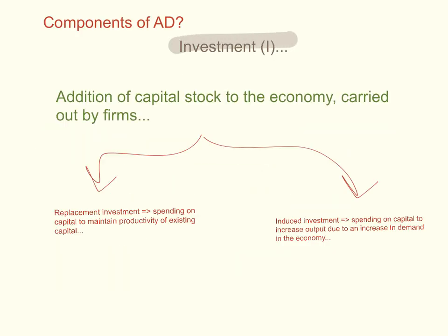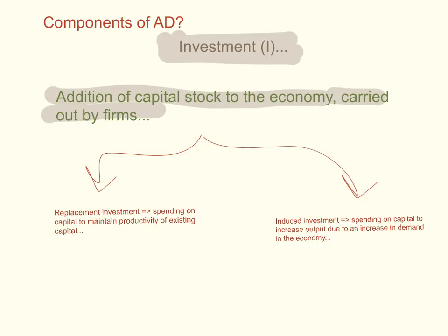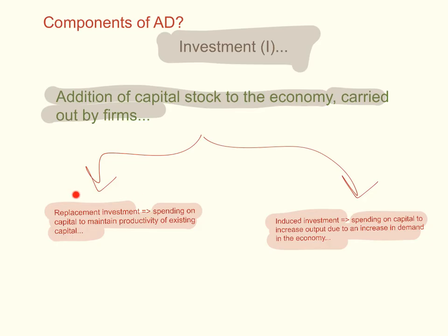The second component of Aggregate Demand is investment — the addition of capital stock to the economy carried out by firms. There are two types: replacement investment, which is spending on existing capital to maintain its productivity; and induced investment, which is spending on capital to increase output due to an increase in demand in the economy. Both types together make up the investment spending by the business sector.